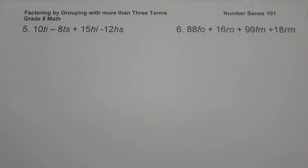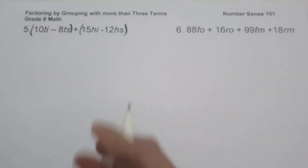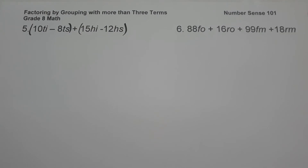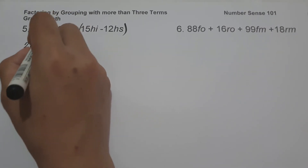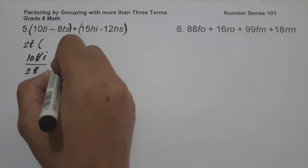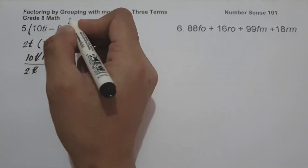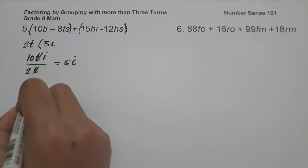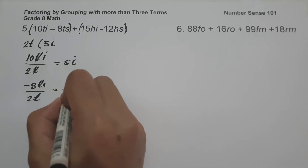On example number 5, we have 10TI minus 8TS plus 15HI minus 12HS. Let us factor this by group. The greatest common factor of 10TI and negative 8TS is 2T. So 10TI divided by 2T: cancel T, 10I divided by 2 gives 5I. Then negative 8TS divided by 2T: cancel T, negative 8S divided by 2 gives negative 4S.